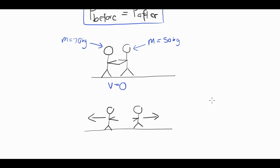The question is, if you're told that the 50 kilogram person is moving at a speed of 2 meters per second to the right, what is the velocity of the 70 kilogram person to the left?